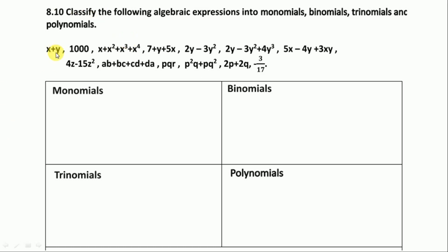The first expression has a plus sign, so we can cut here — it has one and two terms. We write it in binomial. Next is only one thousand, nothing else, so it is a monomial — one term.